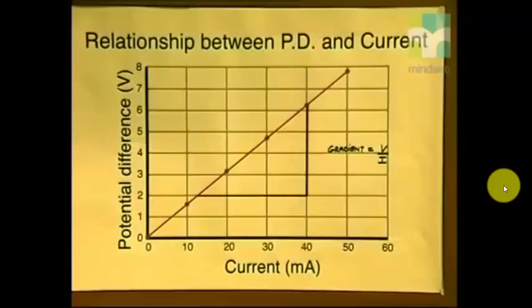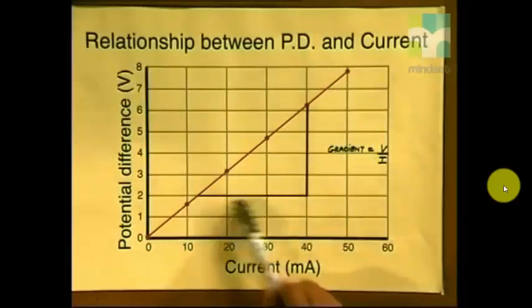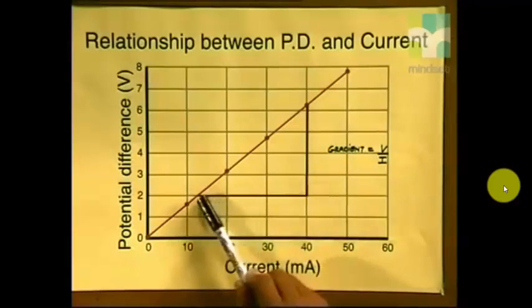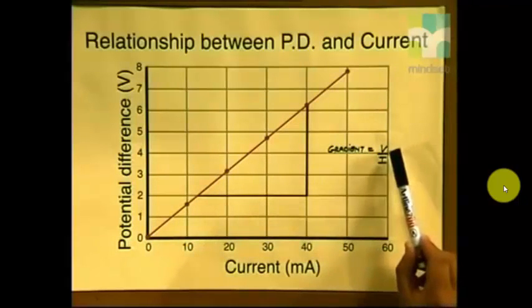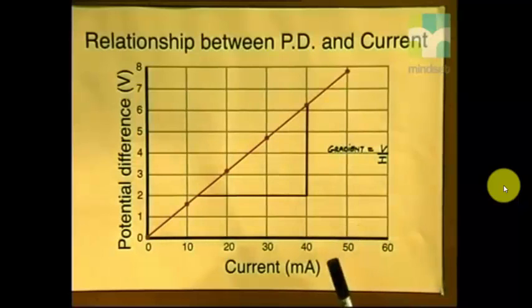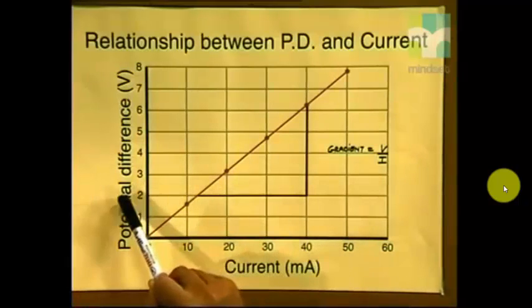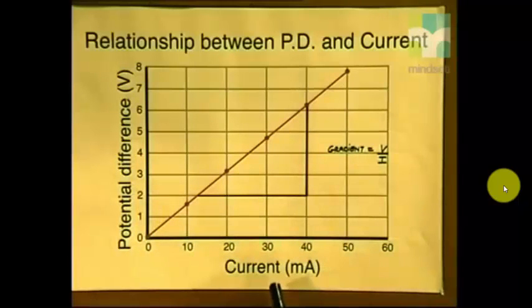Let's now refer back to our graph of potential difference against current. Can you see now, we've got our straight line graph, and we have a constant gradient, where the gradient is equal to our ratio of V divided by I. Thus both the calculation using the table of results and the graph are showing us that potential difference is directly proportional to the current passing through the resistor.